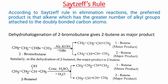To determine which product is preferred in an elimination reaction, we use Saytzeff's rule. This rule states that in an elimination reaction, the preferred product is the alkene that has the greater number of alkyl groups attached to the doubly bonded carbon atoms. So if one possible product has an alkyl group on only one doubly bonded carbon, and another product has alkyl groups on both doubly bonded carbons, the latter is the major product and the former is the minor product.